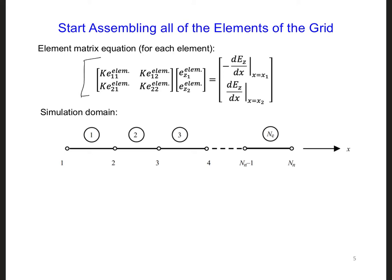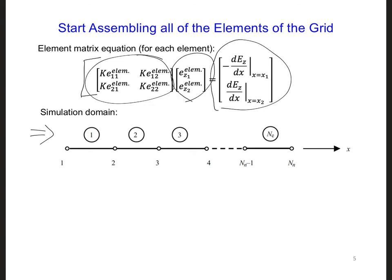Here are the two element equations written in matrix form. So far, we have the KE matrix defined in our code. We said that we would deal with the right-hand side array later after assembling all the elements of the grid together. We're also going to introduce the EZ array after we assemble all the elements together, so that we can only have one EZ component corresponding to each node of the global grid. So the next step is to apply this element matrix equation to all of the elements of the grid.